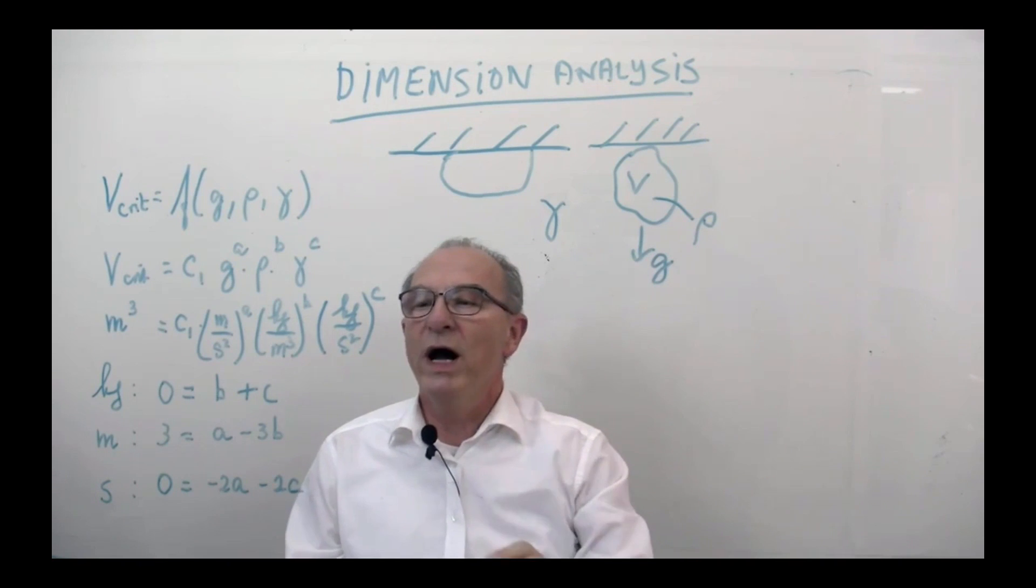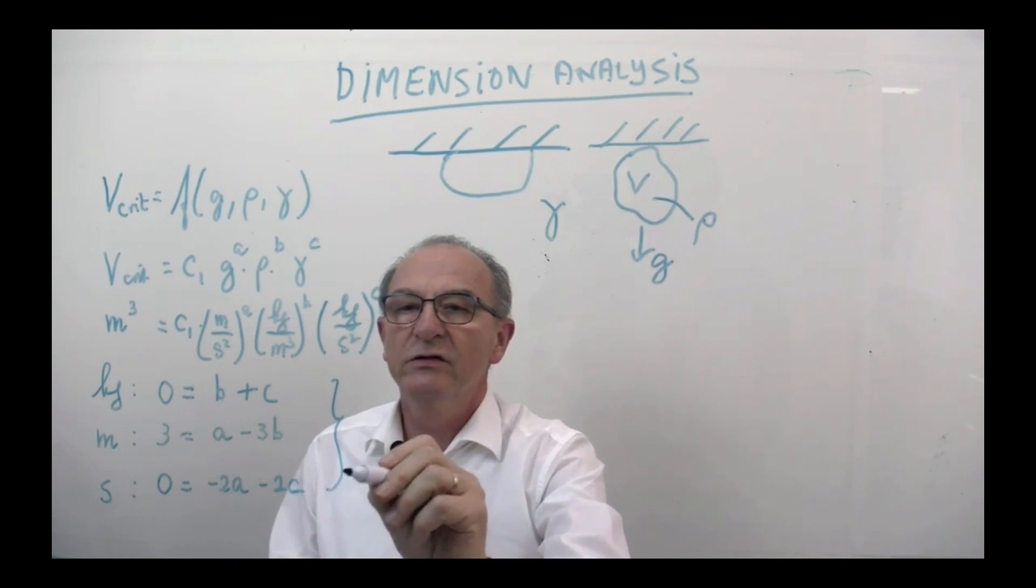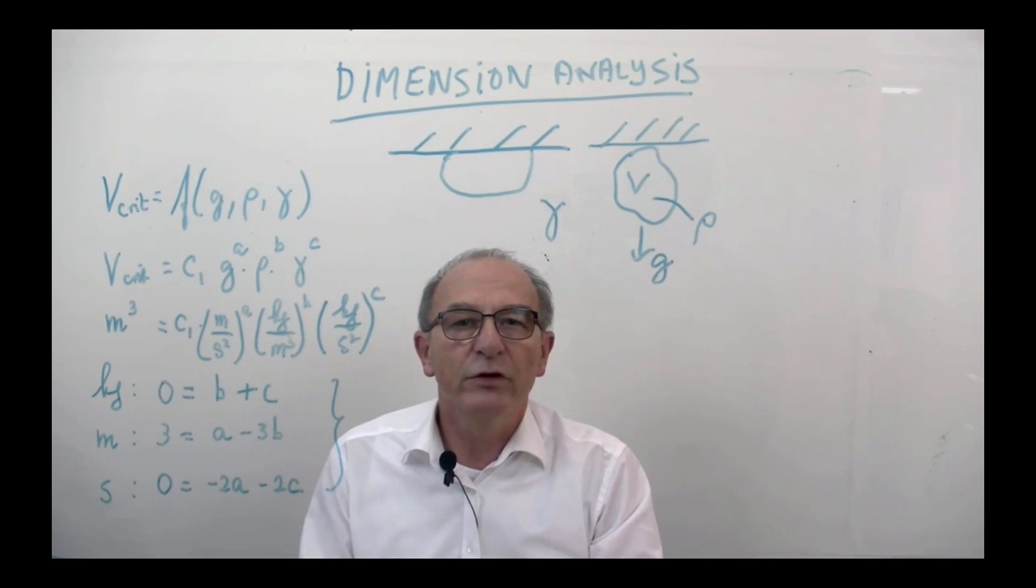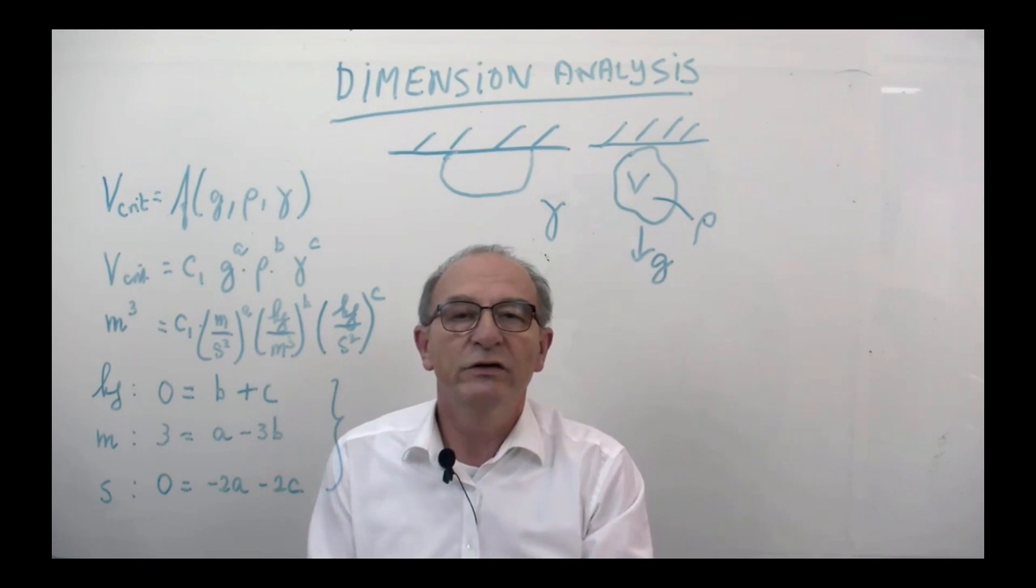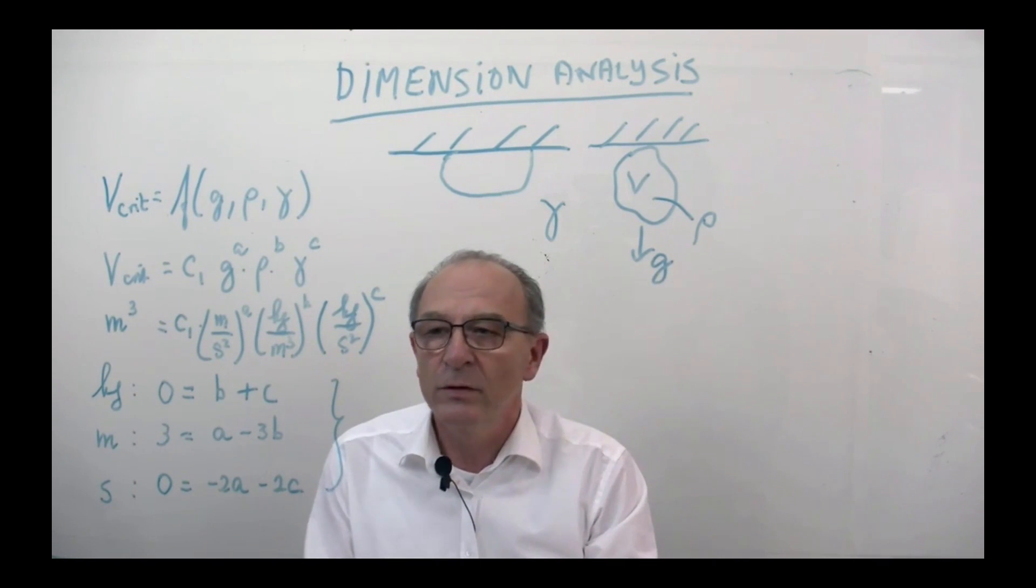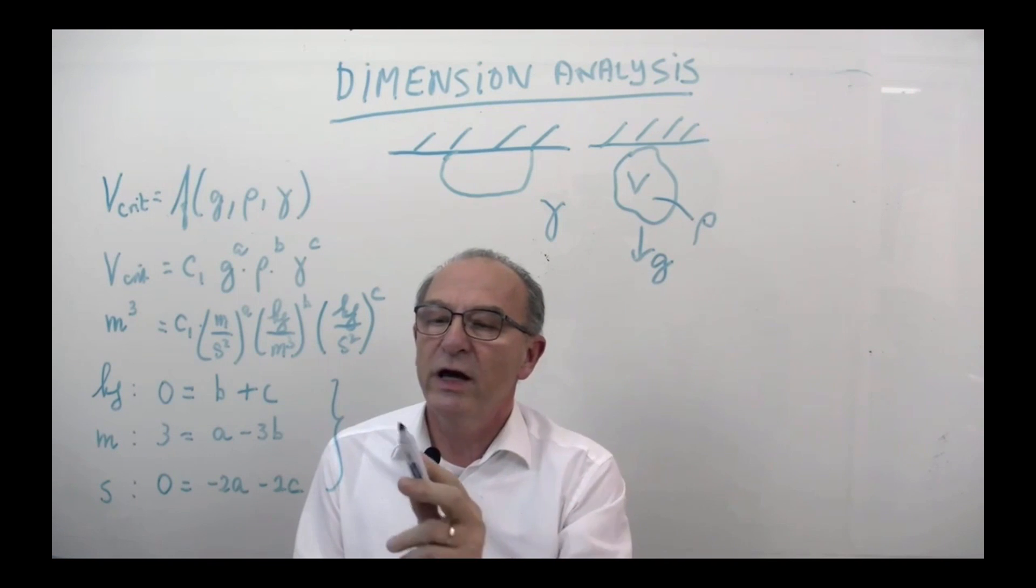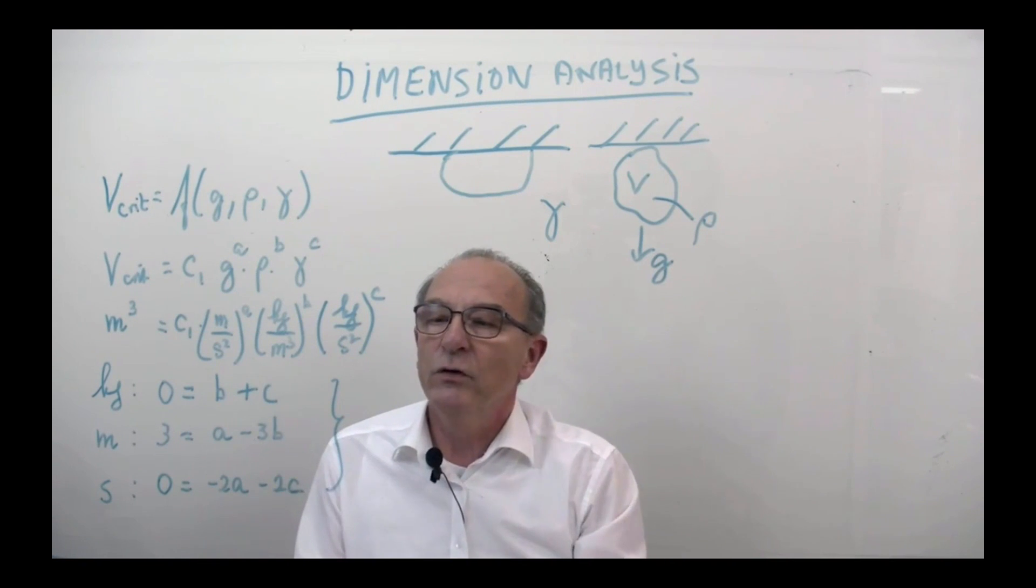Well, if you combine this, you have now three equations with three unknowns. Well, sometimes you have many more variables with only three equations, so you get more dimensionless groups. But in this case, in principle you can solve the whole problem, because you can now derive a value of A out of this.